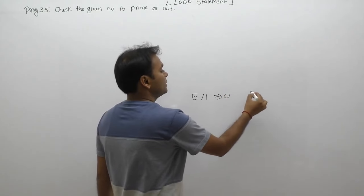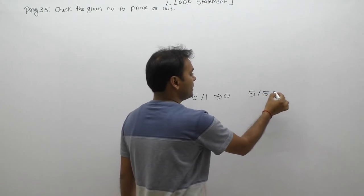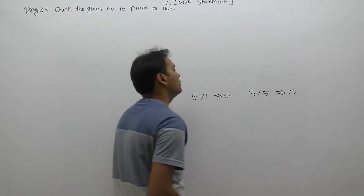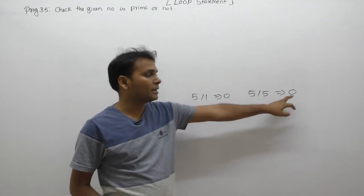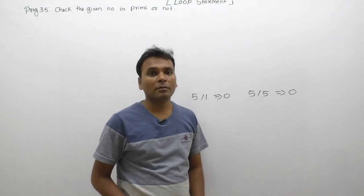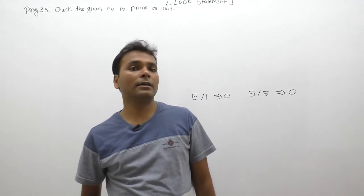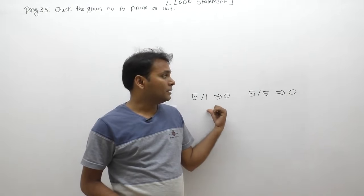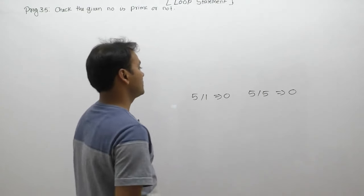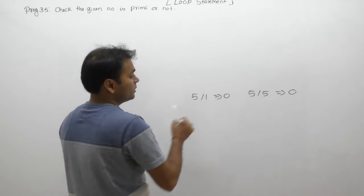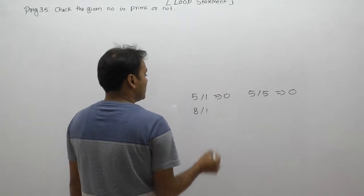For any number like five or eight, if you divide five by five, the remainder will be zero. Same as, any number divided by the number itself will always have remainder zero. When any number is perfectly divided, the remainder is always zero. Eight divided by one also gives remainder zero - any number can be divided by one.